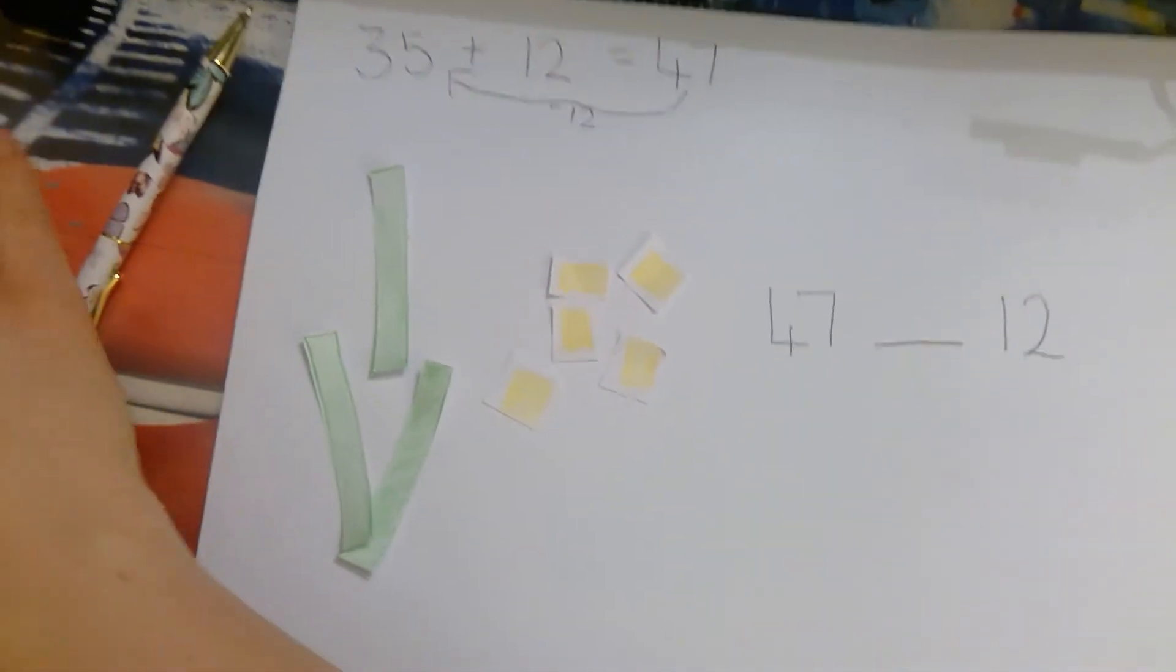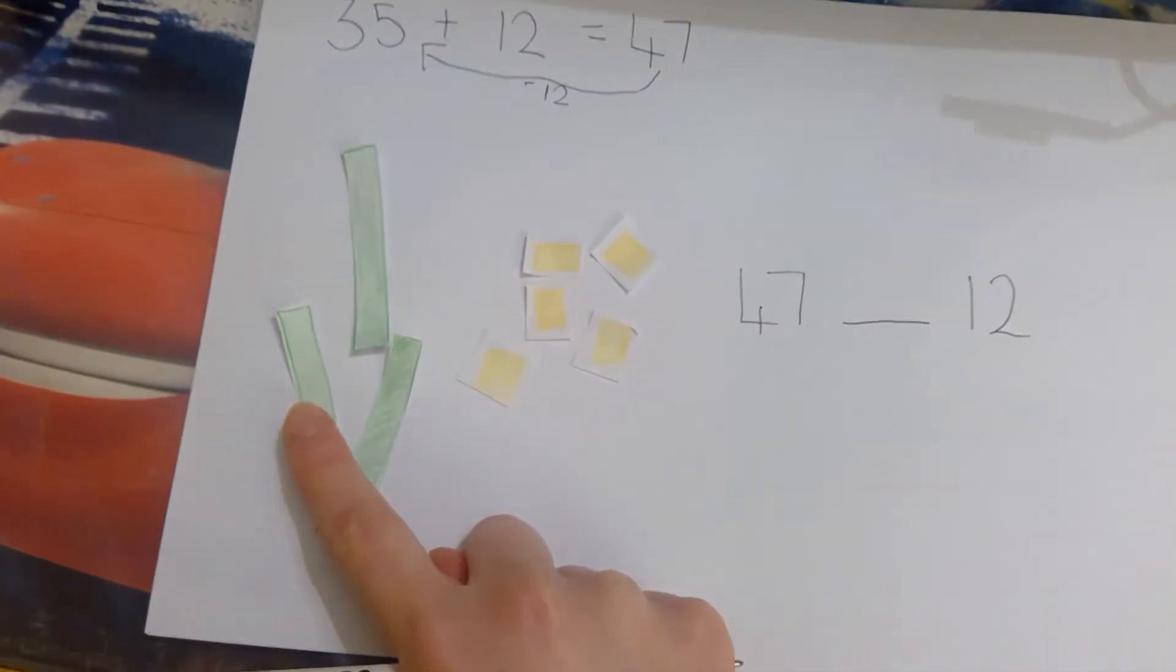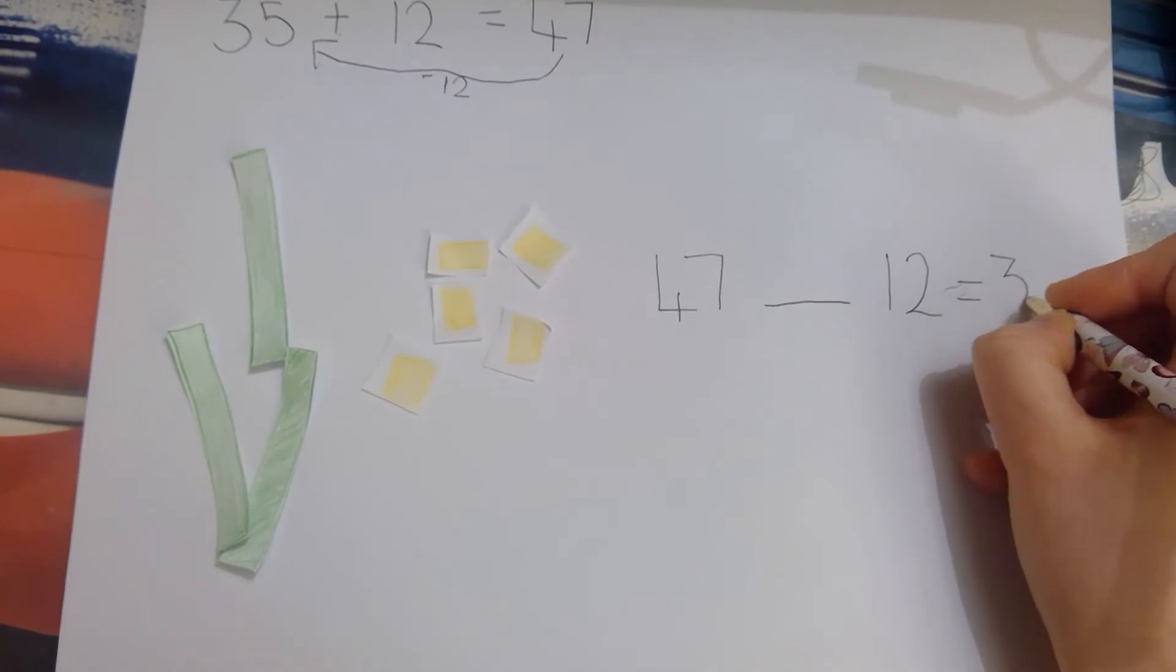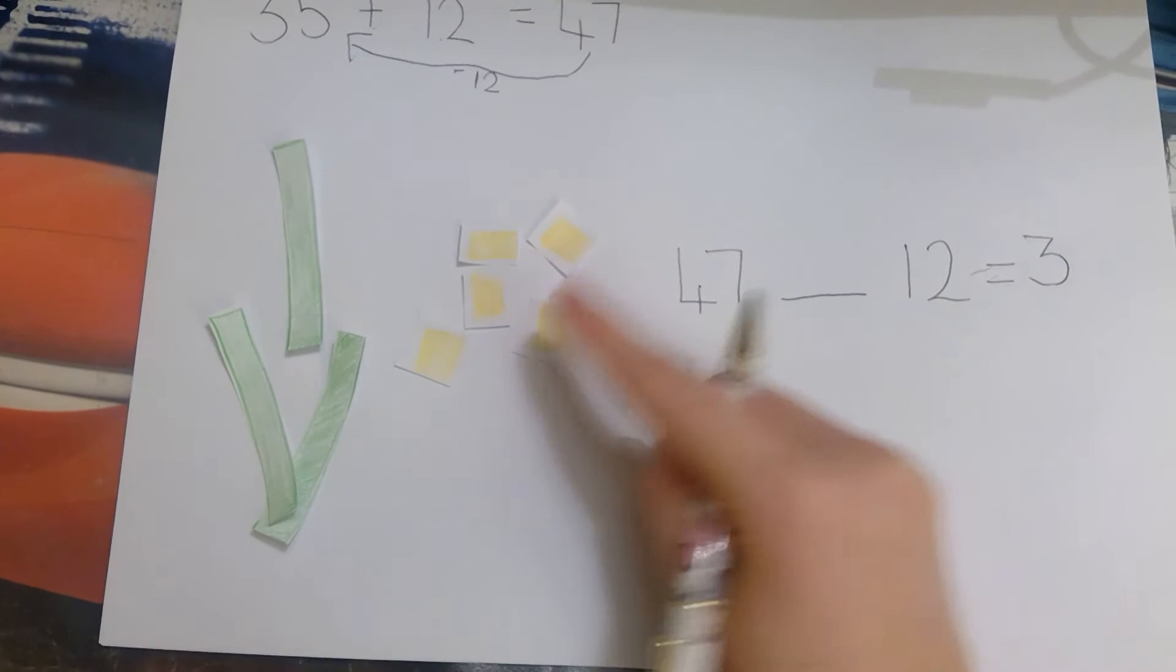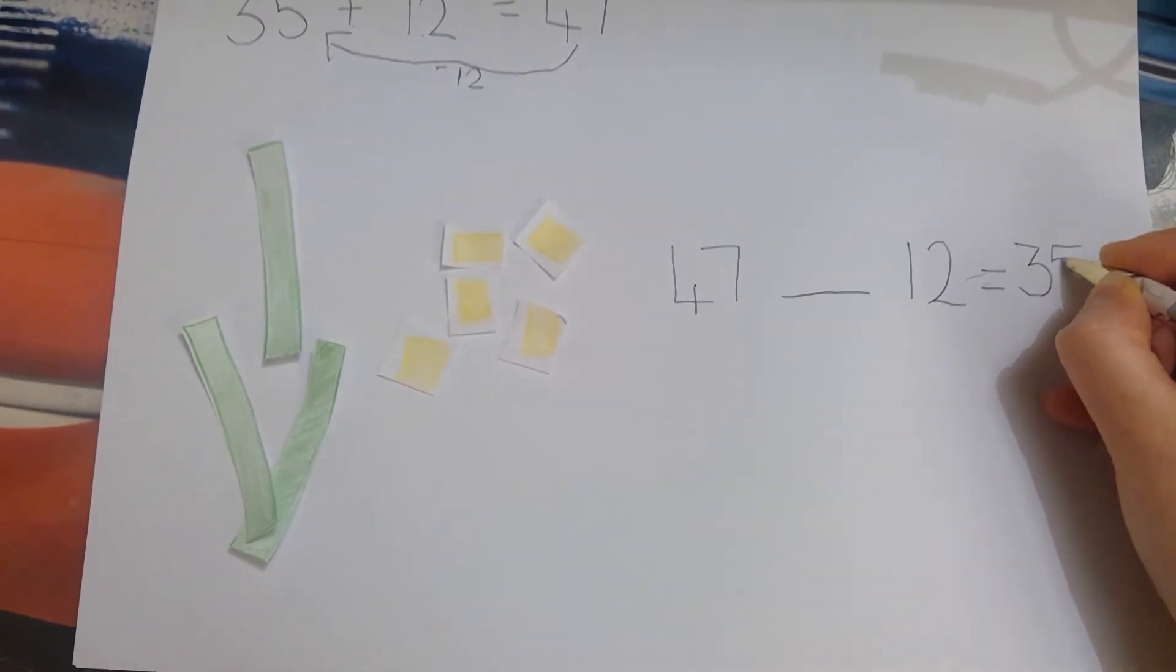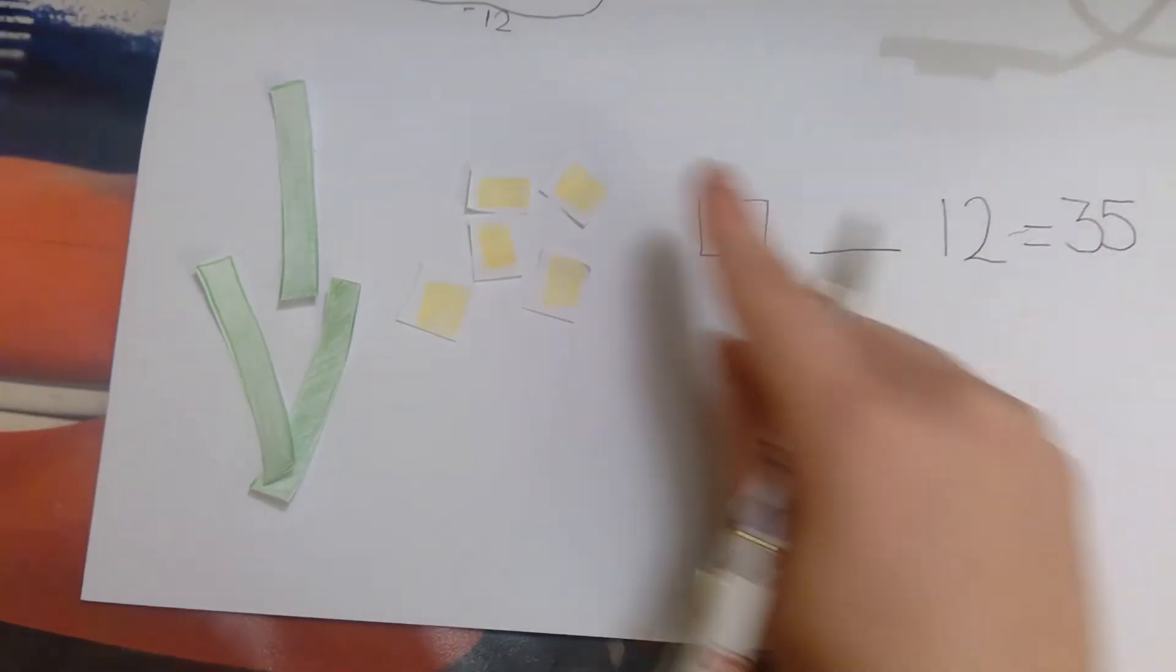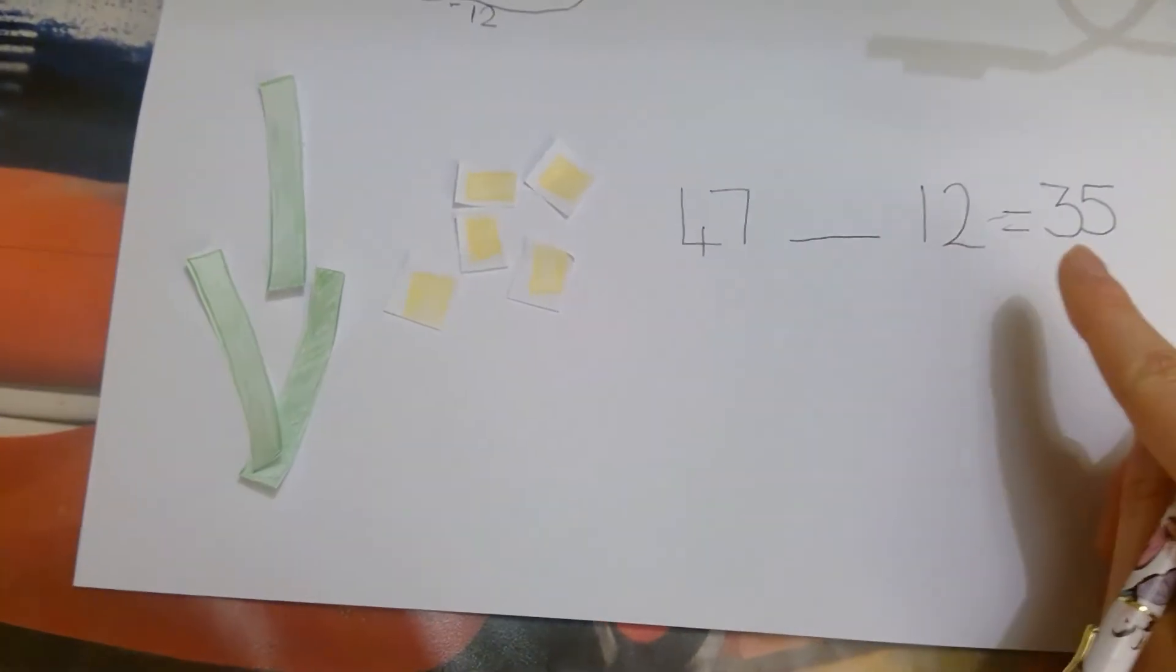What do I have left? 10, 20, 30. 1, 2, 3, 4, 5, 5 ones. 3 tens and 5 ones. 47, take away 12 equals 35.